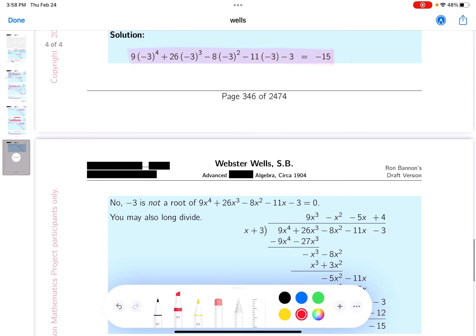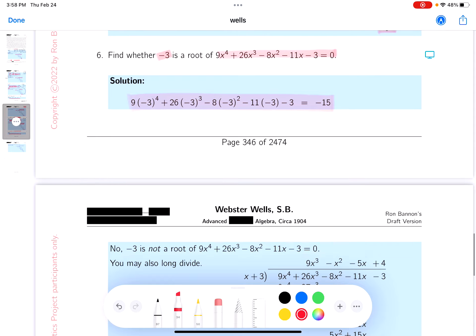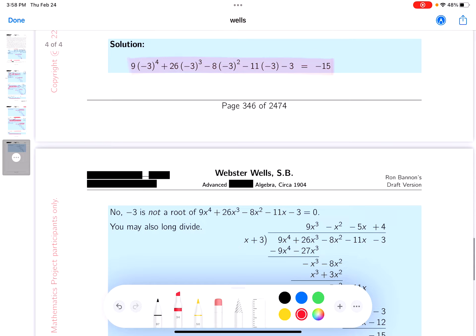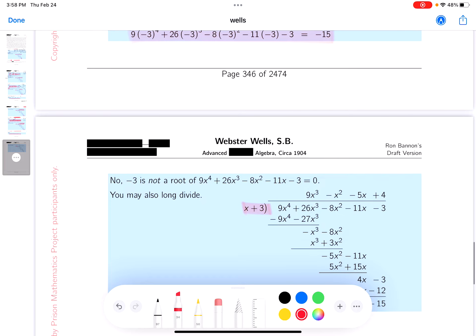I also want to claim that you could do it by long division. If -3 is a root, that means x+3 would be a factor, and so what I do is divide it into the polynomial.